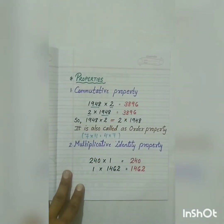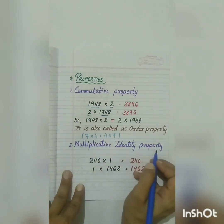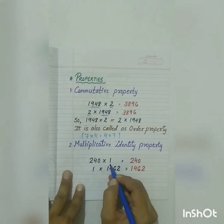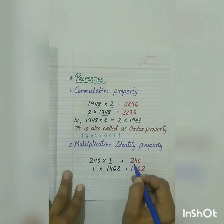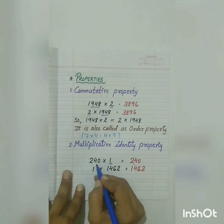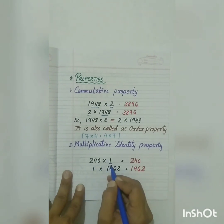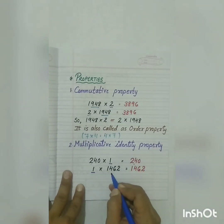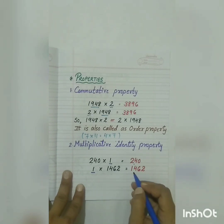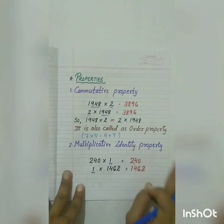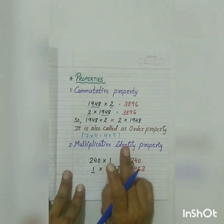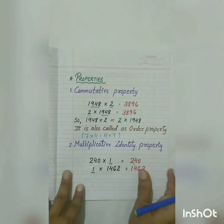Our second property is multiplicative identity property. It is a very simple property. Any number multiplied by 1, the product is always the number itself. For example, 240 multiplied by 1, the product is 240; or 1 multiplied by 1462, the answer is 1462. We can take any number, whether it is a 3-digit or 4-digit number — any number multiplied by 1, the answer will always be the number itself.